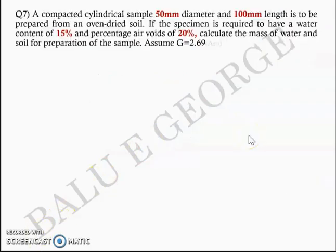Good morning. We will continue our discussion on the numerical problems from the first module. Question number 7: A compacted cylinder sample, 50 mm diameter and 100 mm length, is to be prepared from an oven dried soil. If the specimen is required to have a water content of 15% and 20% air voids, you are asked to calculate the mass of water and the mass of soil required for preparation of the sample.